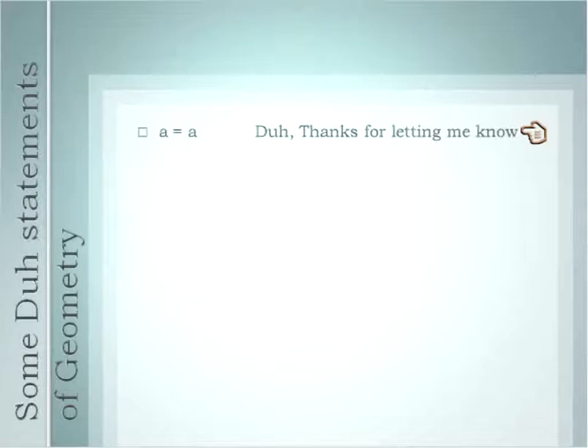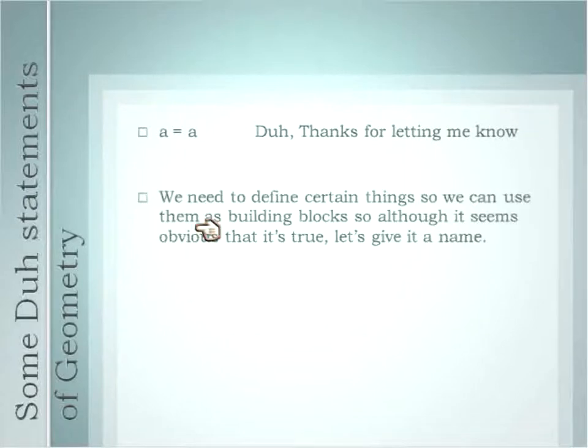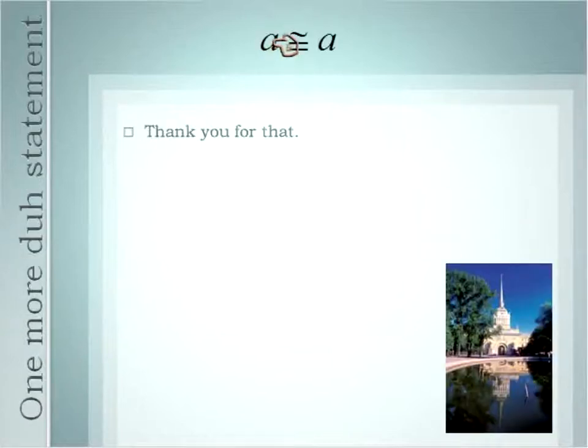A equals A. Thanks for letting me know, Dr. Math. We need to define these terms. And although it seems silly to be able to explain all the steps of our proofs, we need to have a name and a property for each of those steps. So when you have something that looks exactly the same on one side as on the other, like A equals A, this is called the reflective property of equality. I'll give you a moment to reflect on that.